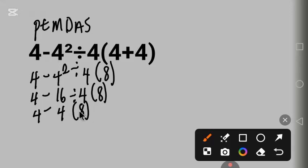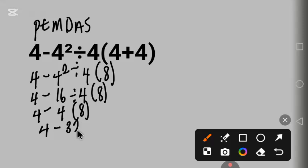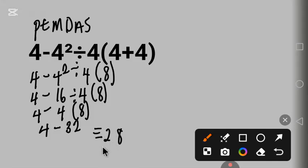Now we solve the multiplication, which involves the parentheses. We have 4 times 8 is 32. Then 4 minus 32 is equal to negative 28. This is the correct answer.